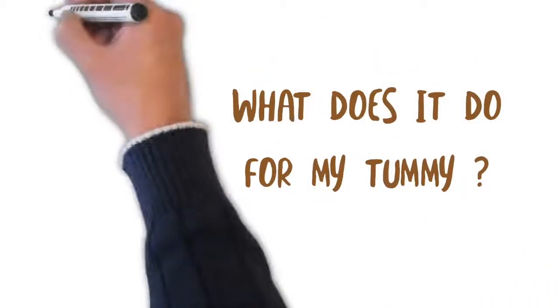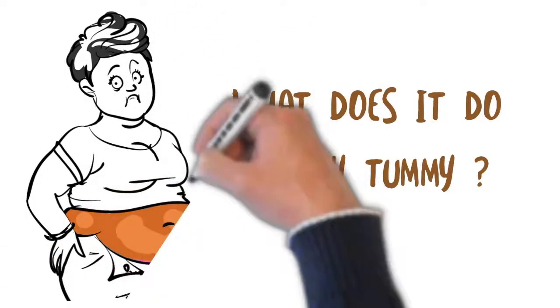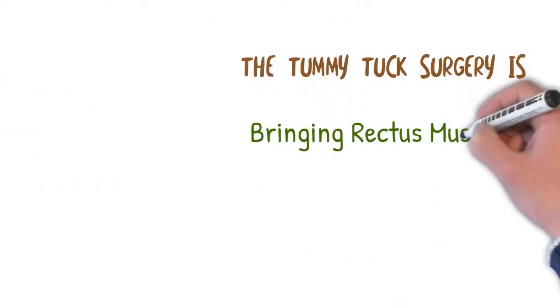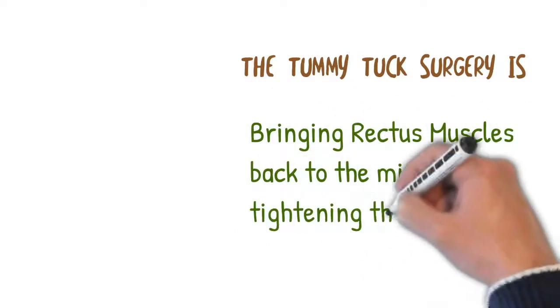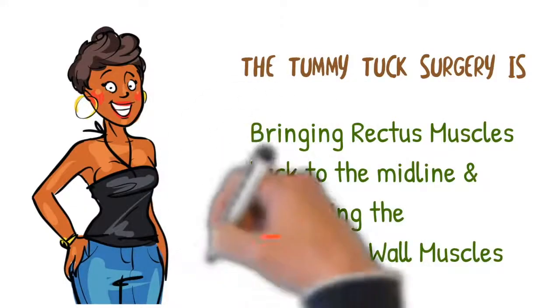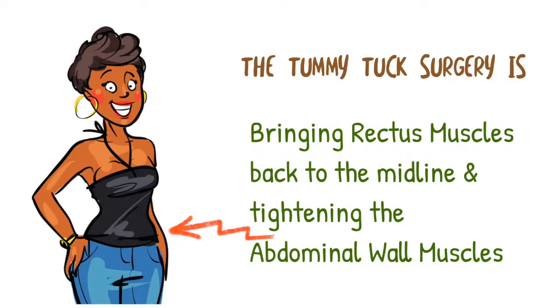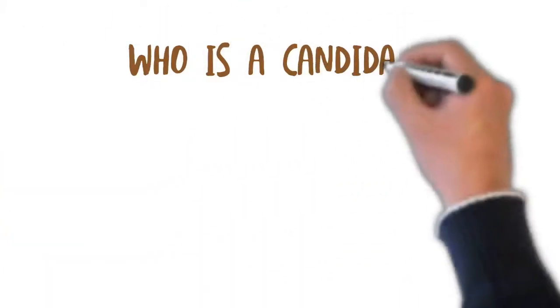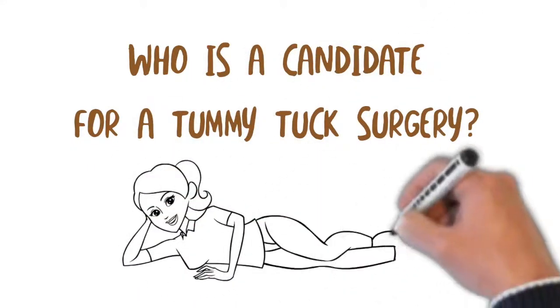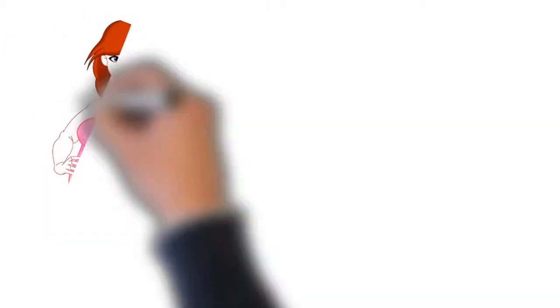The procedure involves bringing the rectus muscles back into the midline. It also involves what we call a plication, which is tightening the muscles of the abdominal wall.